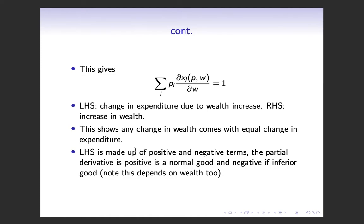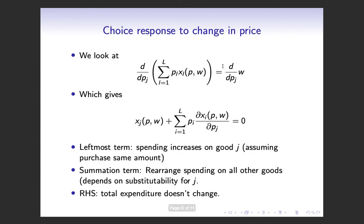The left-hand side is made up of positive and negative terms because some goods are normal goods and some are inferior goods. If wealth is increasing and a good is inferior, that term will be negative — maybe you buy less rice when you get richer, for example. So this is going to be a mix of positive and negative values. That's what happens when wealth changes; now we'll look at what happens when the price of one good — good j — changes.